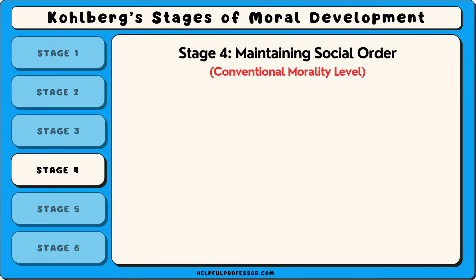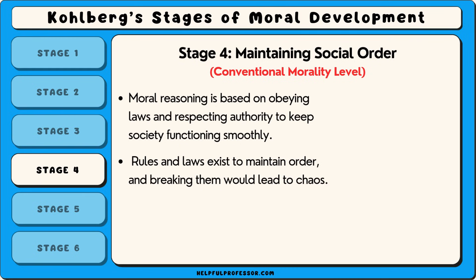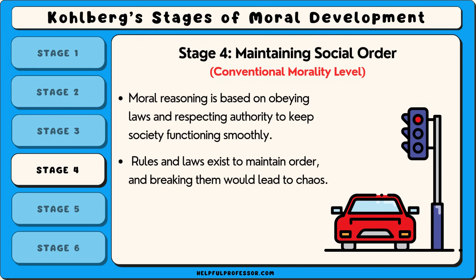The fourth stage is known as maintaining social order. Here, moral reasoning is based on obeying laws and respecting authority to keep society functioning smoothly. People in this stage believe that rules and laws exist to maintain order, and breaking them would lead to chaos. For instance, an adult might stop at a red light...